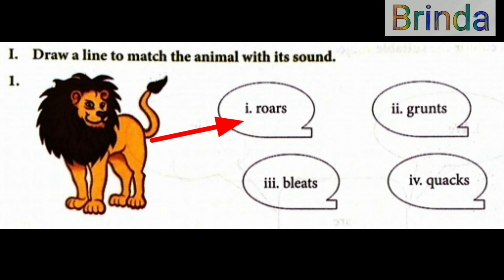Grunt is pig — pig grunts. Goat bleeds. Duck quacks. So the answer is: lion roars.